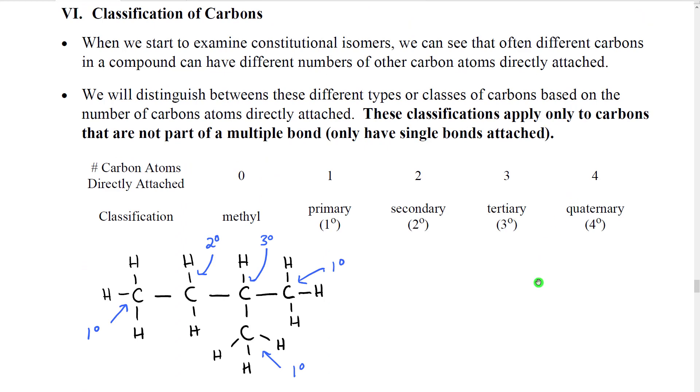Once we start drawing constitutional isomers of carbon-containing molecules, we can see that carbon in particular is very special, because it can have different numbers of carbon atoms and hydrogen atoms attached within a molecule. So, we're going to call these carbons that have different numbers of carbons, different numbers of hydrogens, or different numbers of other atoms attached, we're going to call these types or classes of carbons. Now, this classification scheme only applies to carbons that are not part of a multiple bond. In other words, the carbons have only single bonds attached.